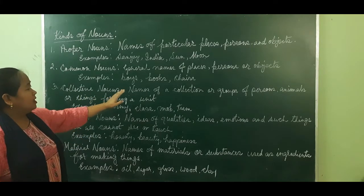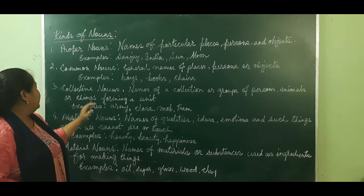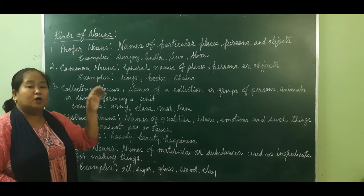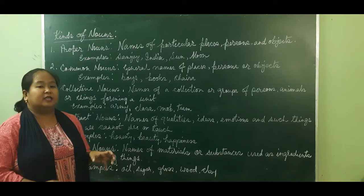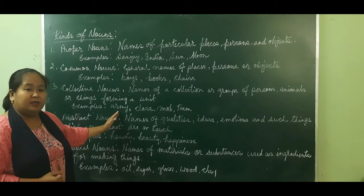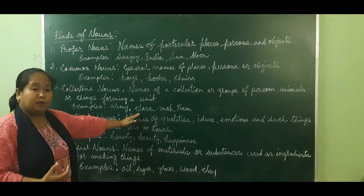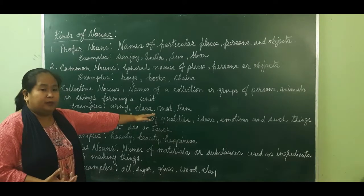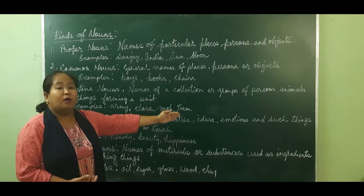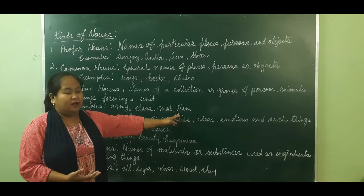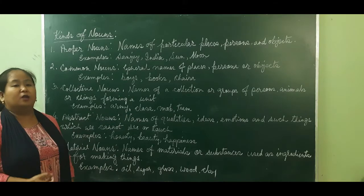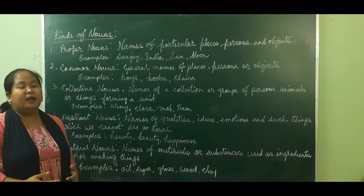Collective nouns are names of a collection or group of persons, animals, or things forming a unit. A collective noun names a group of persons, animals, or things taken together and spoken of as one whole. For example: army — a group of soldiers. Class — a group of students. Mob — a group of people gathered for a destructive purpose. Team — a group of players.